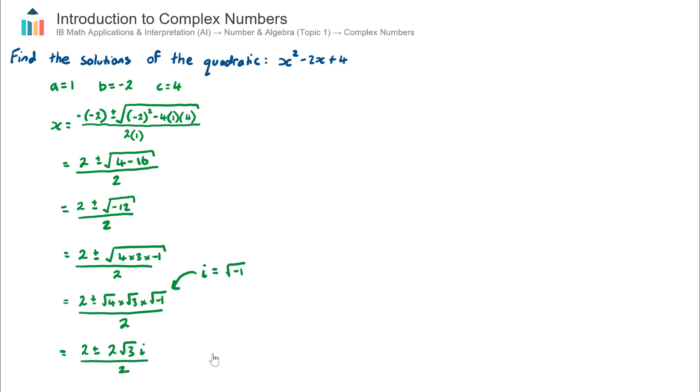Now if I look at this here, the 2√3i - sometimes the i is written in between the 2 and the √3. I tend to like to leave it at the end, but some textbooks will have this as 2i√3. I can actually simplify this one step further now.